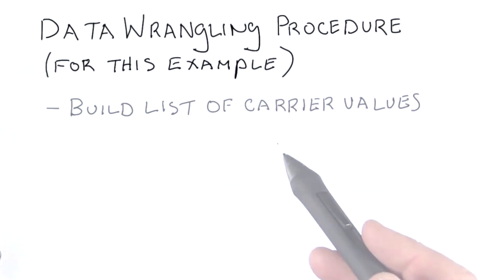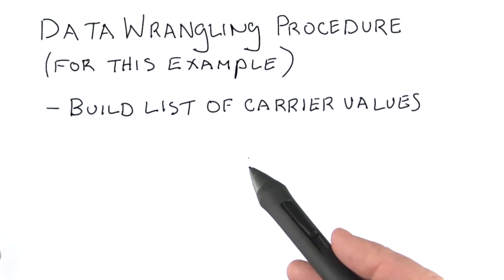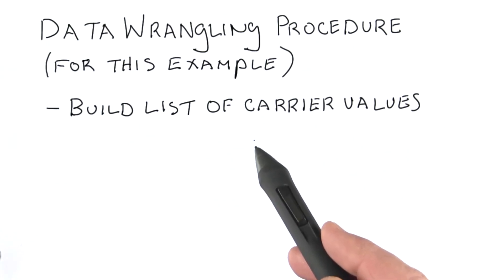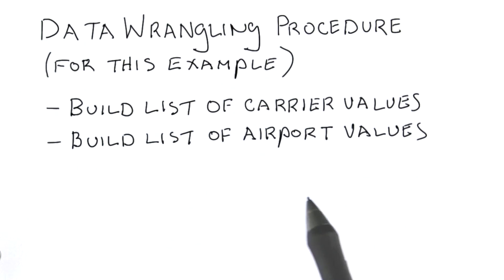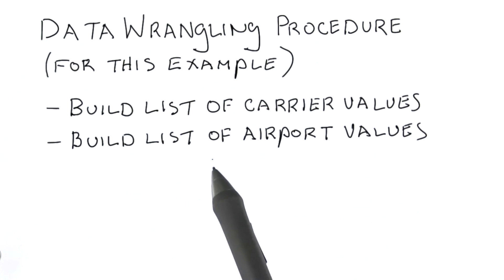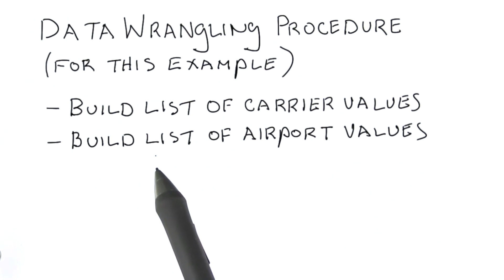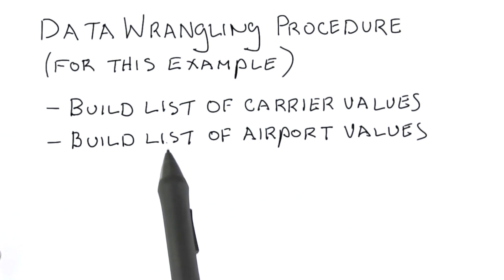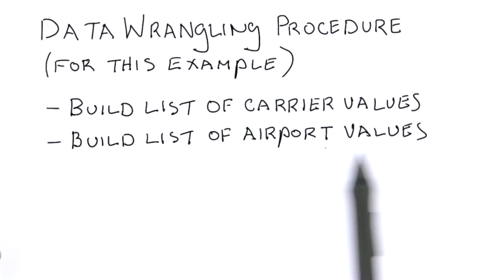Let's talk about our procedure here. The first thing we want to do is build a list of all carrier values. We could do that by hand — it might actually be a little bit easier to do it that way, just by looking at the HTML. We then need to build a list of airport values. There are a lot of values here, so we probably want to write a little script to pull those out. All pages are going to have exactly the same list for both of these, so we can just use the browser to download an example page and pull those values out.